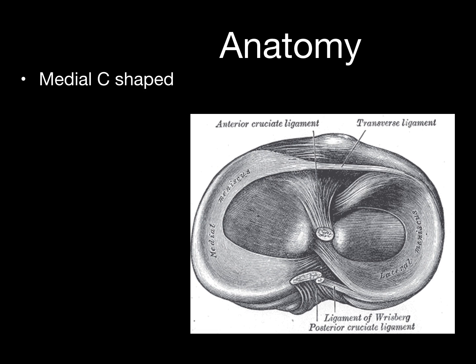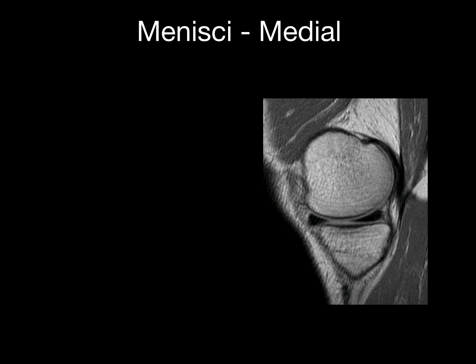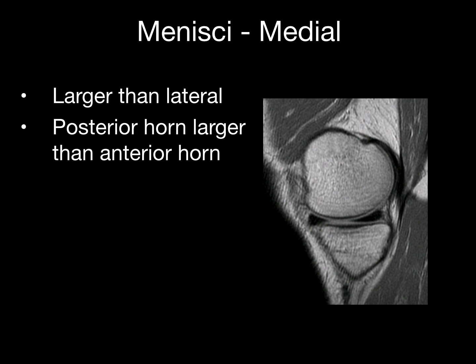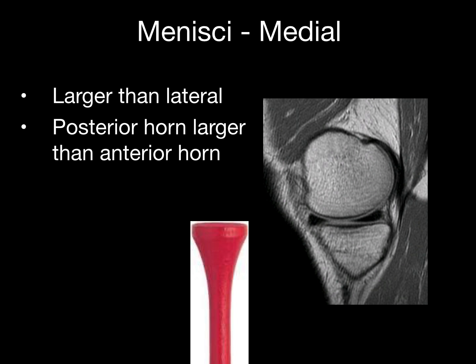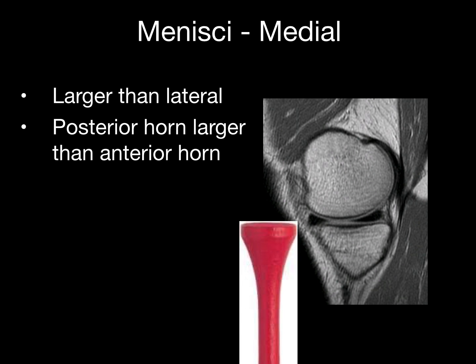The medial meniscus is C-shaped while the lateral is more circular. The medial meniscus is larger than the lateral, and its posterior horn is larger than the anterior horn. One way to find out whether you're on the medial side is to look at the symmetry of the tibia — it looks like a golf tee.